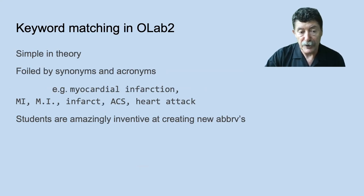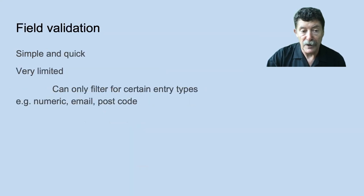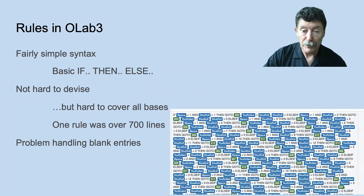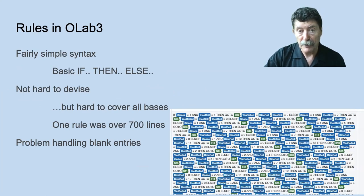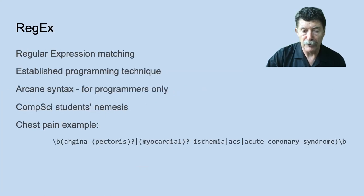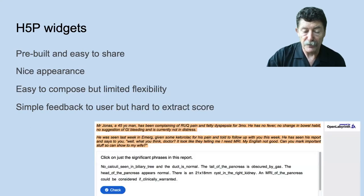Briefly, we tried keyword matching, but that gets confounded by synonyms, abbreviations, etc. Field validation turned out to be simple but not very useful. We did have rules in OLAB 3, which were quite powerful, but again could be quite complex to create. Regular expression matching, which would be a comp-sci student's nightmare, can have very odd syntax, so I didn't find that useful.